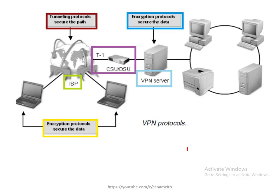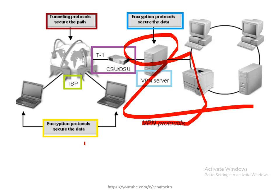Looking at VPN protocols: on one side you have an ISP, and you need a device such as a CSU/DSU for T1 connections. The tunneling protocol secures the path — making the tunnel secure — while the encryption protocol modifies the format of data while it's traveling. The VPN server uses encryption protocols to secure data, while tunneling protocols make the path secure. Both play their own roles throughout the communication.